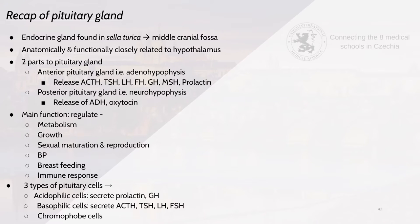First, a quick recap of the pituitary gland. The endocrine gland is found in the sella turcica in the middle cranial fossa. It's anatomically and functionally closely related to the hypothalamus. There are two parts to the pituitary gland: we have the anterior pituitary gland, which is also known as the adenohypophysis.